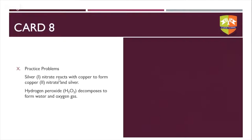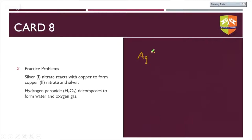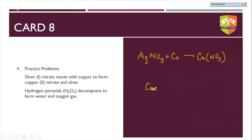For silver nitrate reacting with copper: silver(I) means silver with a valency of one; silver nitrate is AgNO₃. Copper is Cu. Copper nitrate — if copper has an oxidation state of one you get CuNO₃, but if it has an oxidation state of two you get Cu(NO₃)₂. The problem specifies copper(II) so we end up with Cu(NO₃)₂.